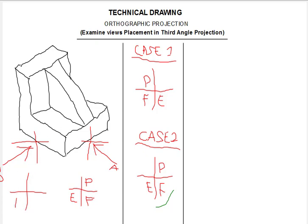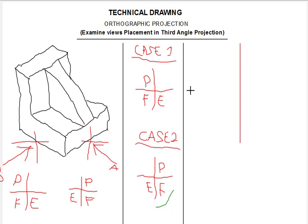You have the front view in the third quadrant, the end view in the fourth quadrant, and then the plan will come in the second quadrant. As I said, the plan and the front view are always vertical, and the front and end views are always horizontal — always horizontal, facing each other. This is how we get the views placement in third angle projection, just as we did in our previous lesson.